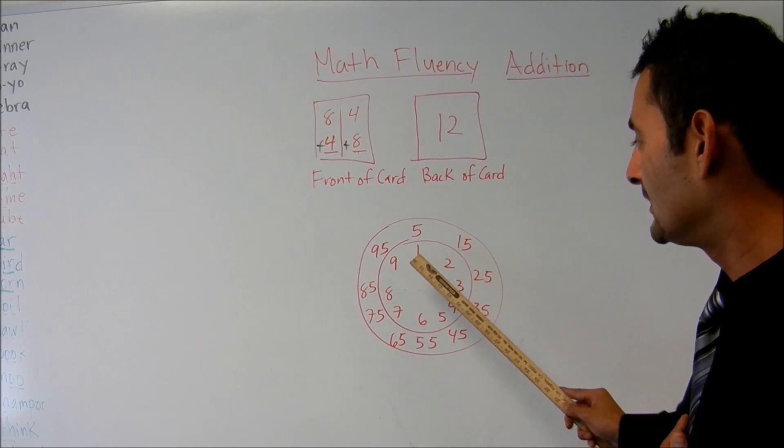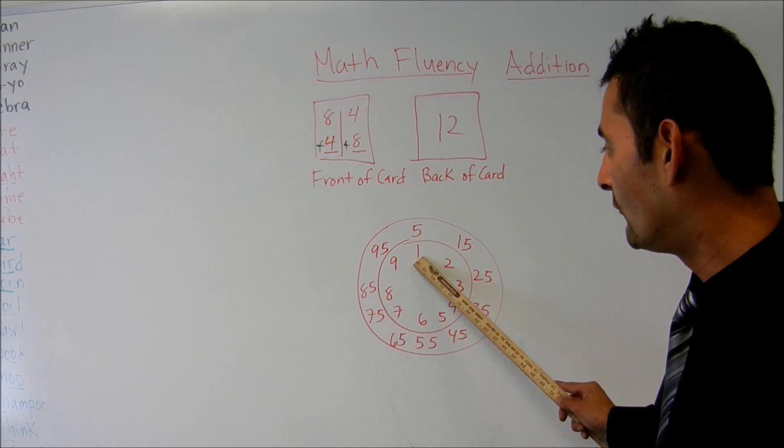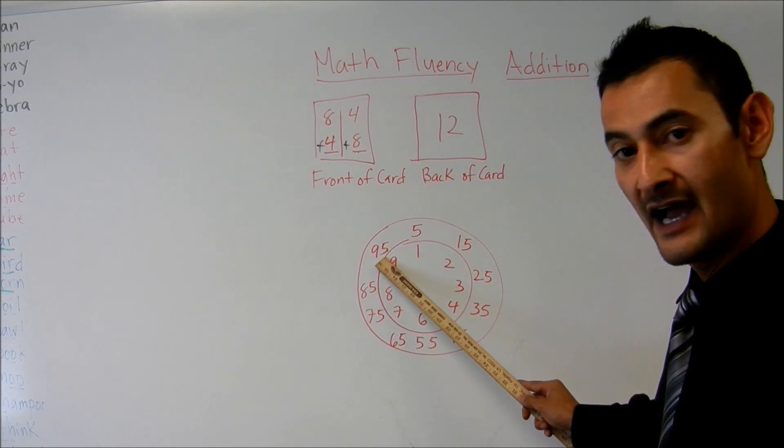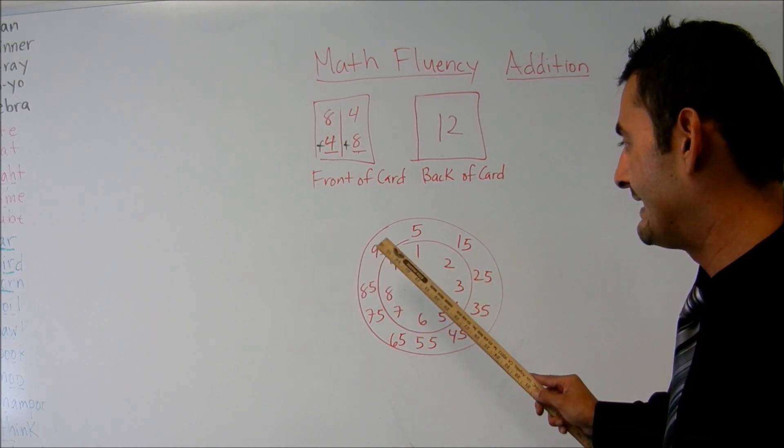one plus fifty-five, one plus sixty-five, one plus seventy-five, one plus eighty-five, one plus ninety-five. And then you would repeat the same with two, three, four, five, six, seven, eight, and nine.